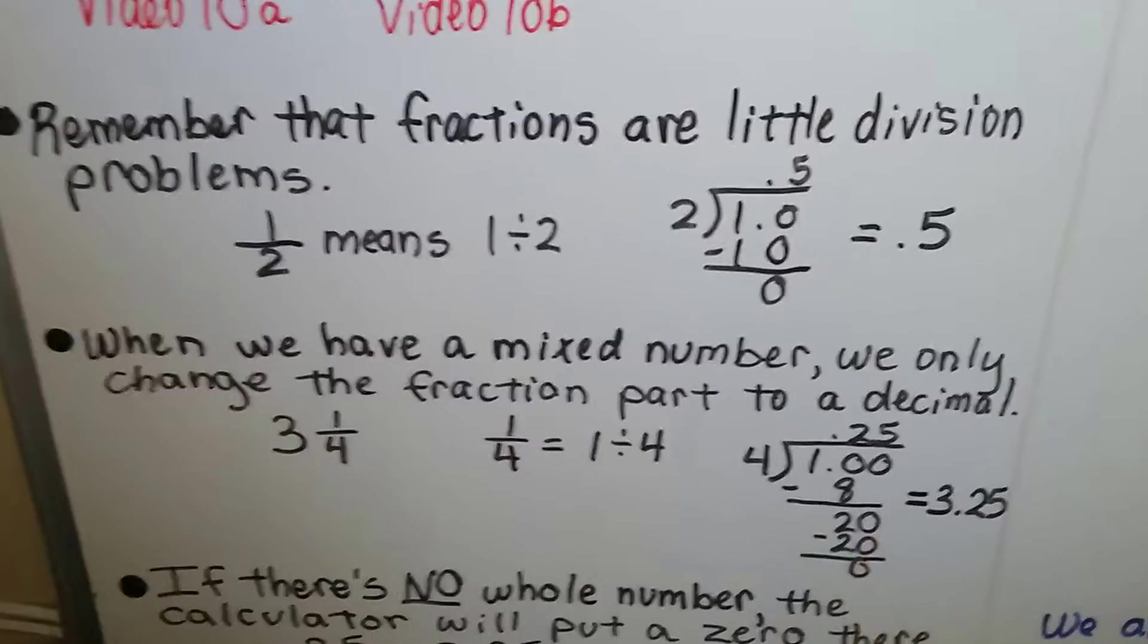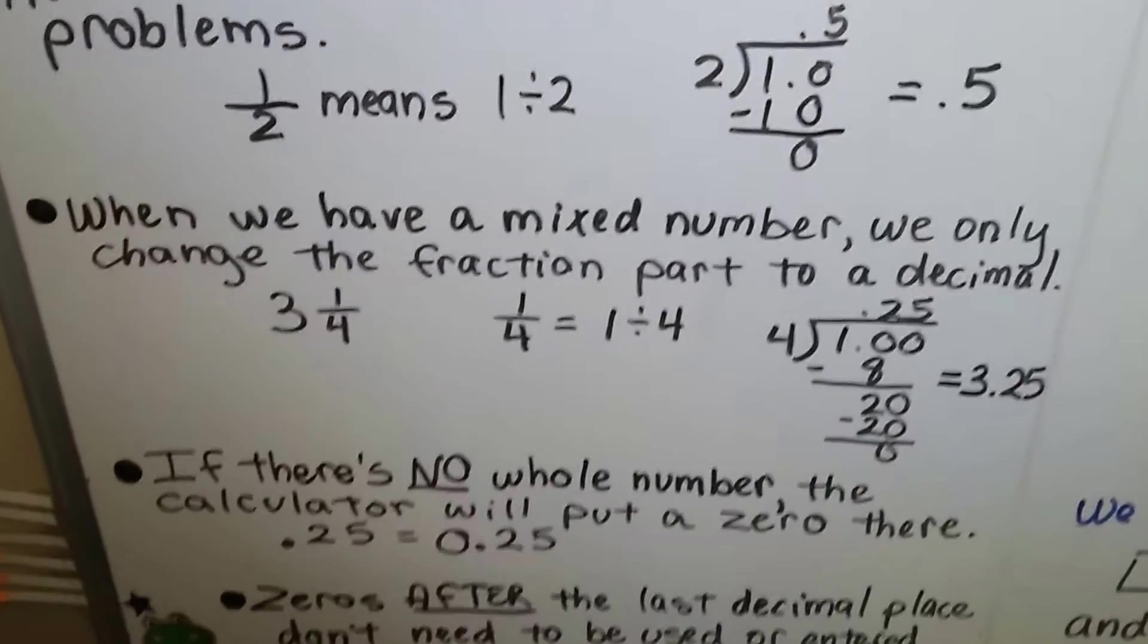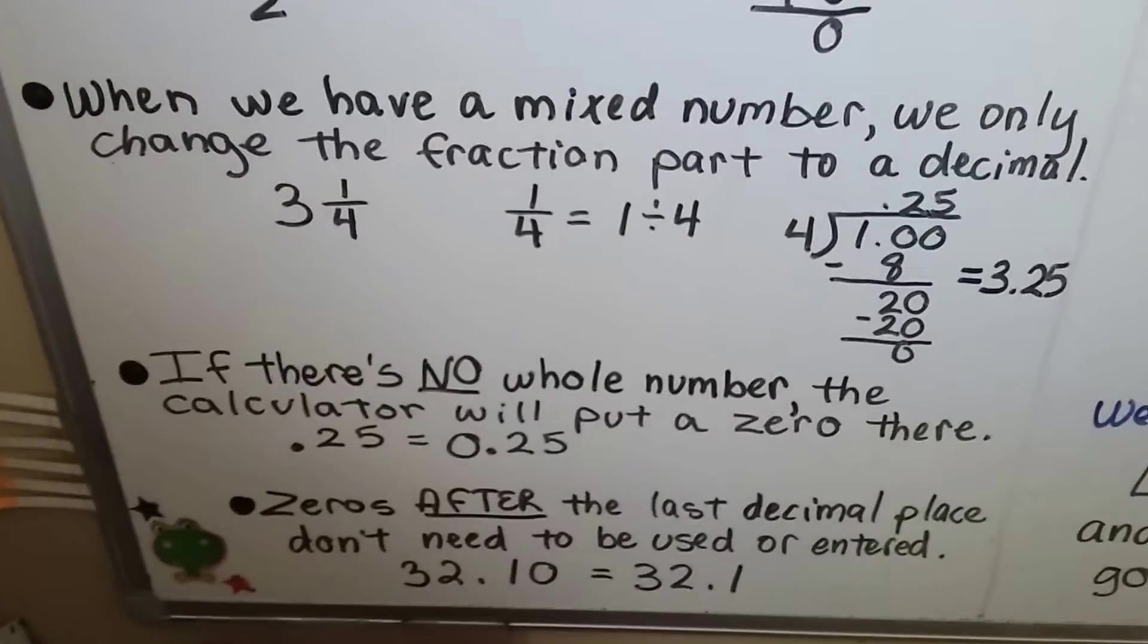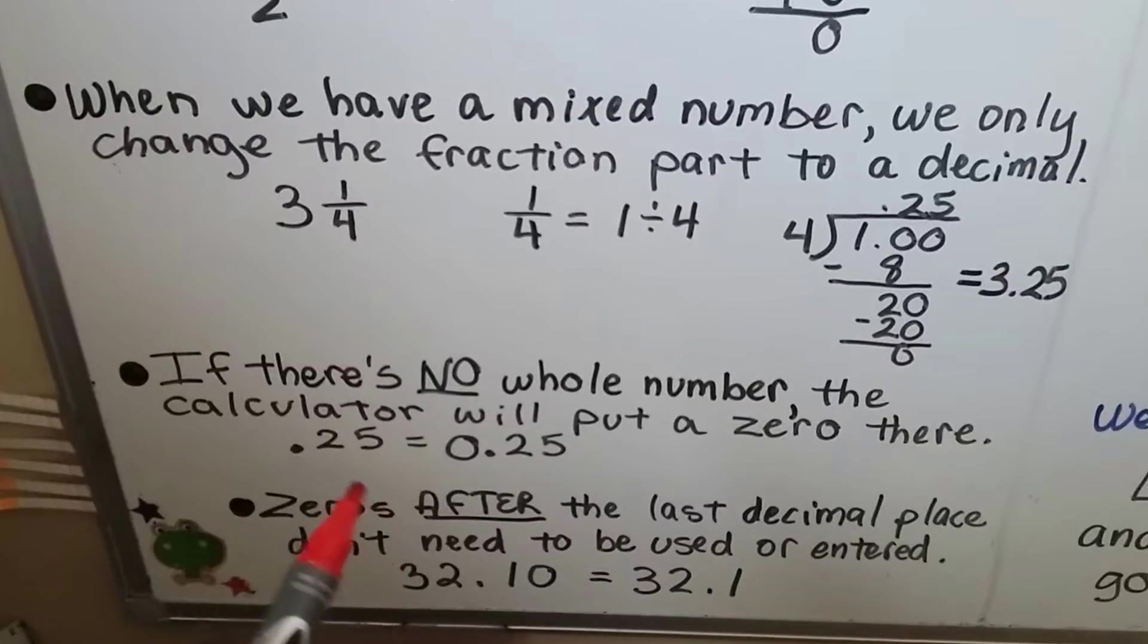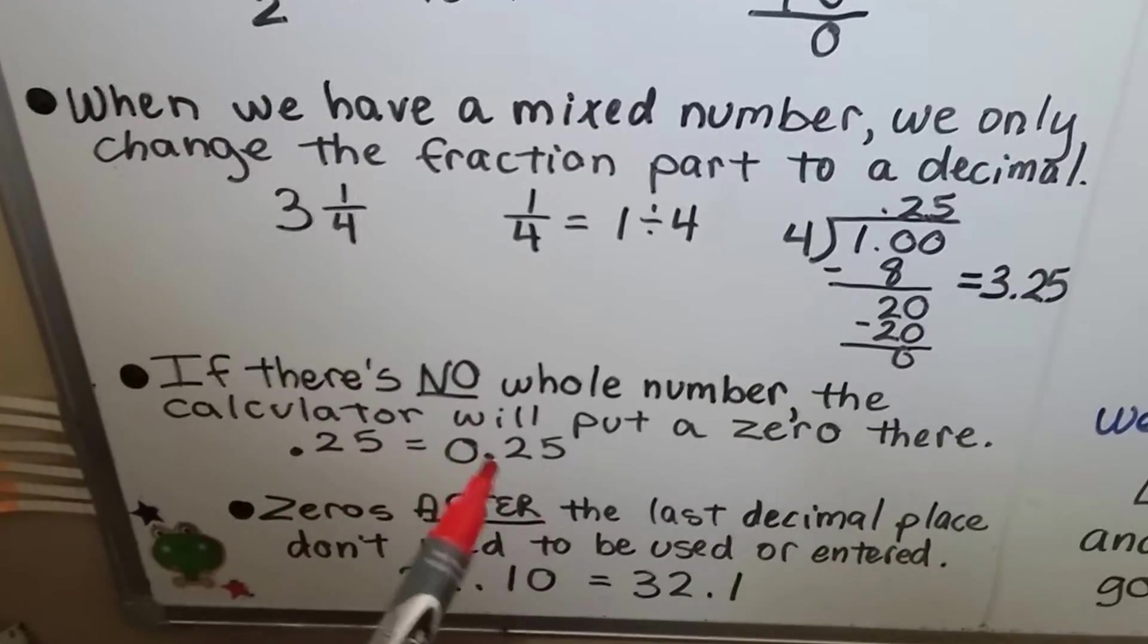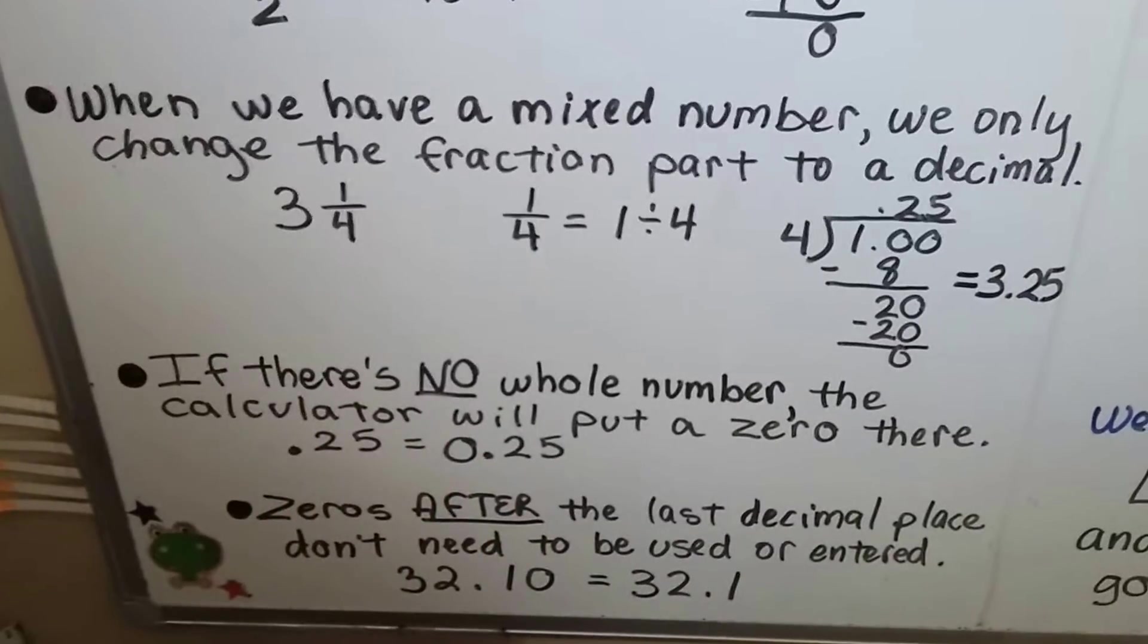You could make a mistake and forget to put that whole number back on. If there's no whole number, the calculator will put a 0 there, so 0.25 will come out as 0.25. It's just a placeholder, no big deal.